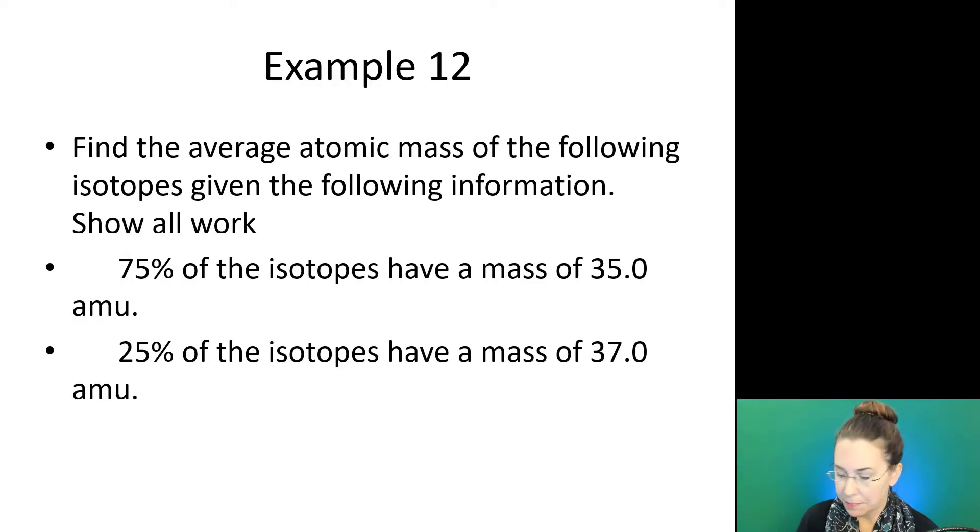Let's try example 12. We need to find the average atomic mass of the following isotopes given the following information and we're going to show all our work. This is a really good thing to do at all times. Always show your work. It allows us to backtrack and see if we have any issues. So here 75% of our isotopes have a mass of 35.0 amu and 25% have a mass of 37 amu.